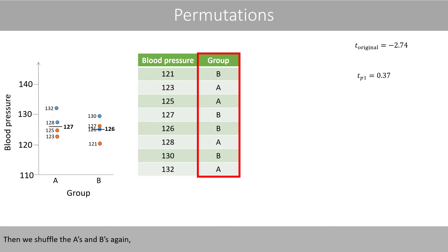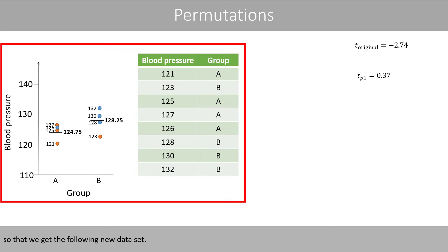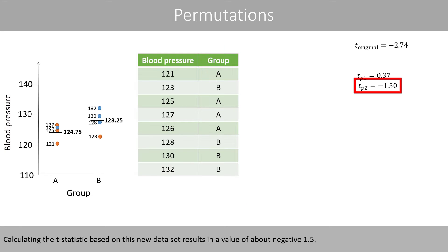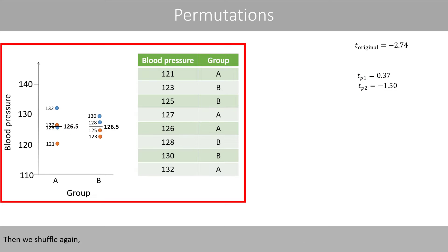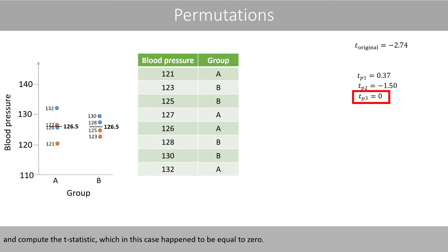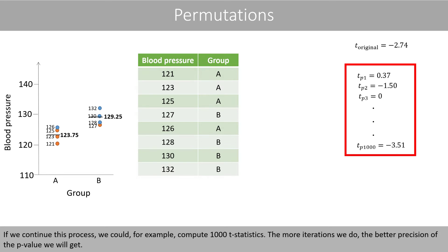Then we shuffle the A's and B's again to get the following new data set. Calculating the t-statistic based on this new data set results in a value of about negative 1.5. Then we shuffle again and compute the t-statistic, which in this case happened to be equal to 0. If we would continue this process, we could, for example, compute 1,000 t-statistics. The more iterations we do, the better precision of the p-value we will get.